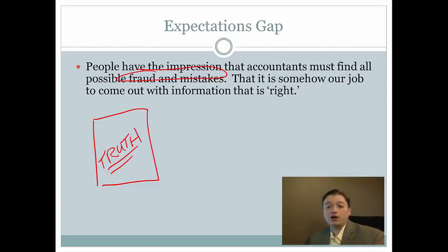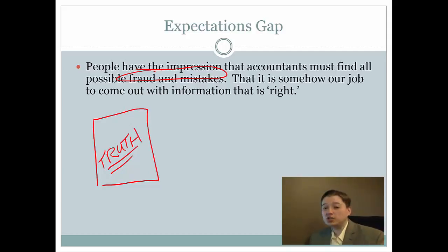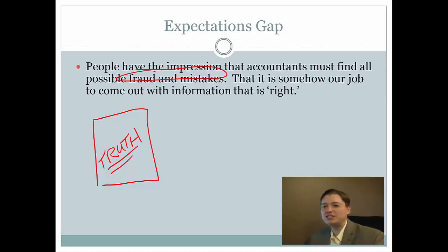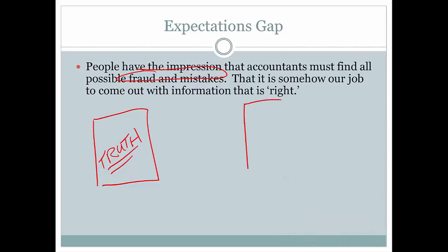People have this idea that not only is there truth, but they think accountants are going to find all possible frauds and mistakes. The only way we could possibly find every single mistake and fraud is if we were at every single transaction. Think about Walmart — how many transactions happen at all their registers all day, all week, all year, across every Walmart in the world? It's too much. So what we do instead as auditors, since we can't be everywhere and it'd be too expensive, is audit to find out if the financial statements are materially correct — the point at which a normal, rational investor would change his or her decision.